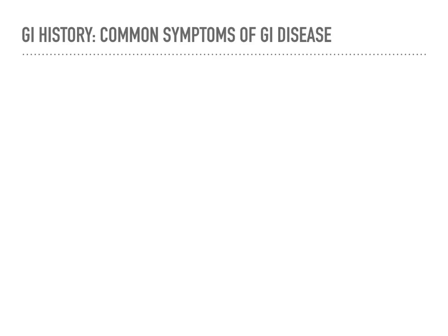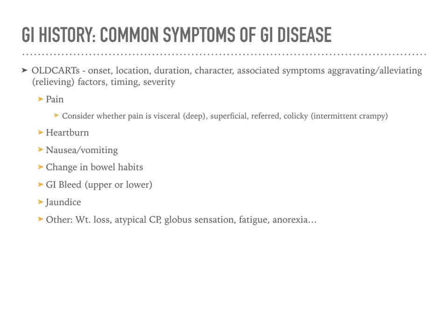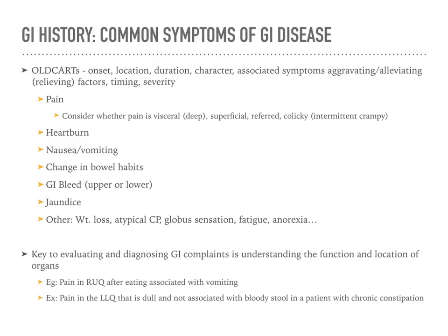When looking at common symptoms of the GI tract, you want to do a very good and thorough history. Make sure you utilize your old cards, getting all the factors to collect good data. You want to know the pain and its location. It's important to know that you have multiple organs in the abdomen — pain in the right upper quadrant or left lower quadrant will help you determine where to go with your diagnosis. Consider whether this pain is visceral versus superficial, referred, or intermittent cramping. These are all important factors when assessing the abdomen.